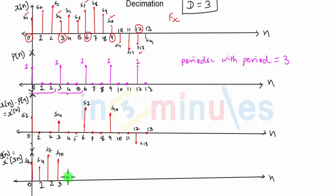After s4, we have taken s7, s10, and we will just show one last sample that will be at n equal to 4, and that sample will be nothing but s13. So s13 will occur like this.